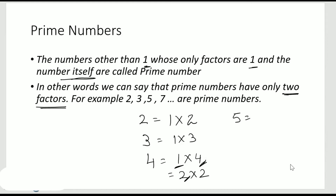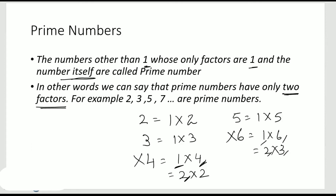For 5, 1 times 5 is 5. For 6, 1 times 6 is 6, and 2 times 3 is 6. So you see here 4 factors: 1, 2, 3, 6. So that means 6 is also not a prime number.